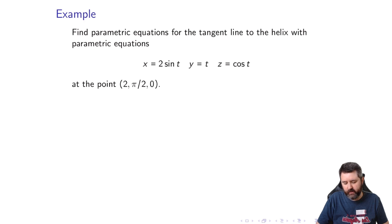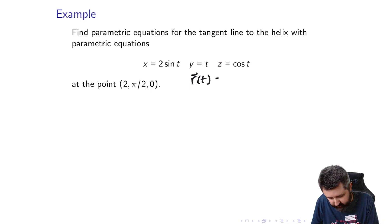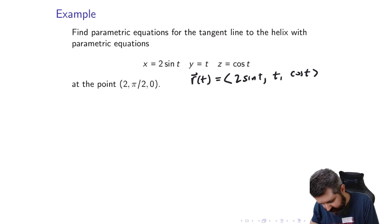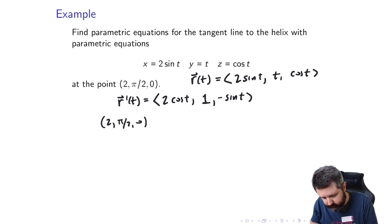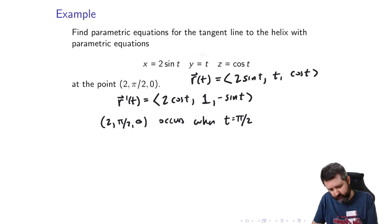Find parametric equations for the tangent line to the helix with parametric equations x = 2 sin t, y = t, z = cos t. We can write this as a vector function. To get the tangent line, we need r'(t) since the tangent line is parallel to the tangent vector. Taking the derivative of each component gives r'(t) = ⟨2 cos t, 1, -sin t⟩. The point (2, π/2, 0) occurs when t = π/2, which you can see from the y component.